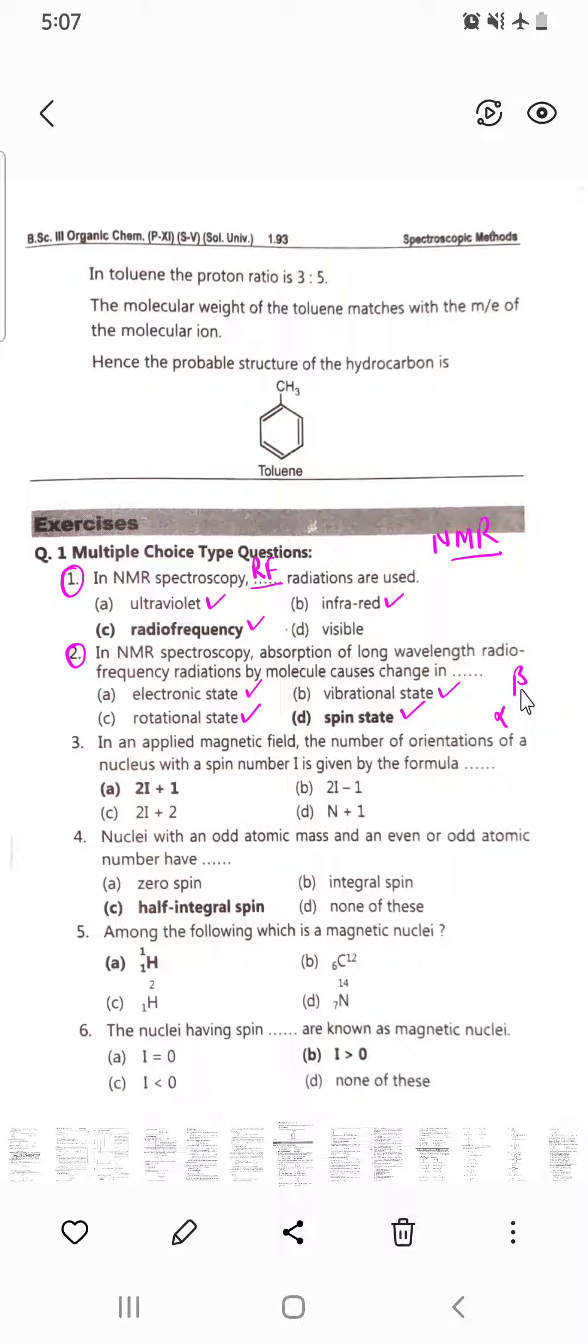Third question: In an applied magnetic field, the number of orientations of a nucleus with a spin I is given by the formula...